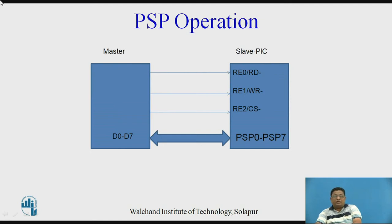This diagram explains how the PSP operates. In the multiprocessor system, one device is the master and the PIC will work as a slave. The master always initiates communication sessions. The data bus of the master can be directly connected to Port D of the PIC microcontroller, with 3 control signals: RD bar, WR bar, and CS bar. When RD bar and CS bar are both 0, the master is reading a byte from the slave PIC. When WR bar and CS bar are both 0, the master is writing a byte into the slave PIC. The condition where both RD bar and WR bar are 0 never occurs in the system.